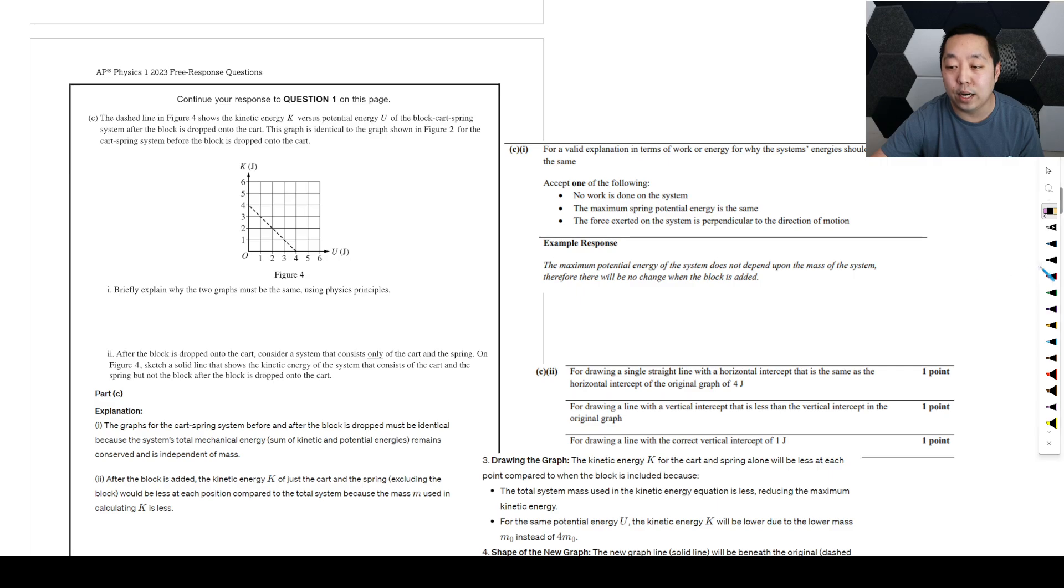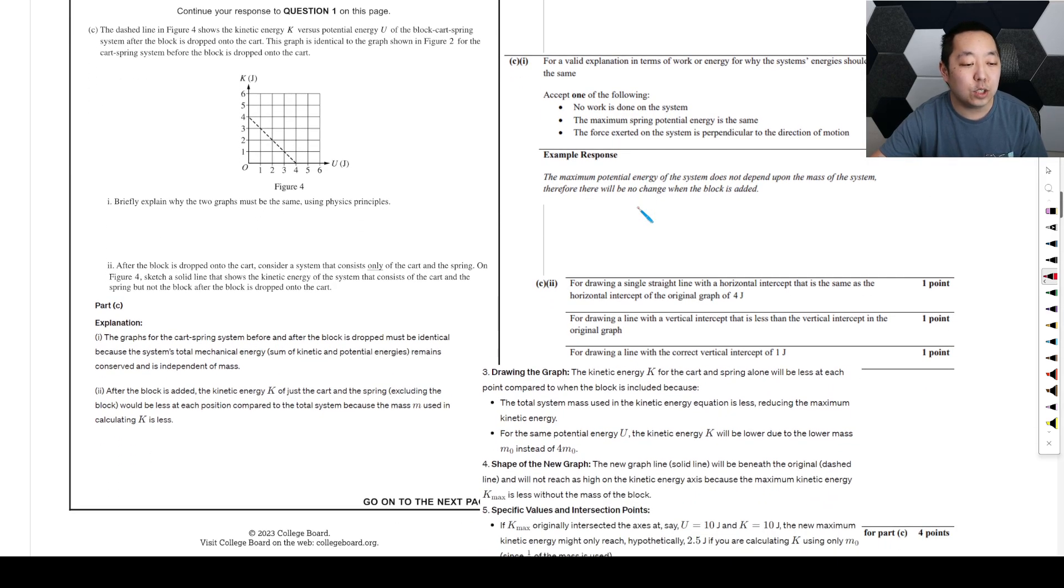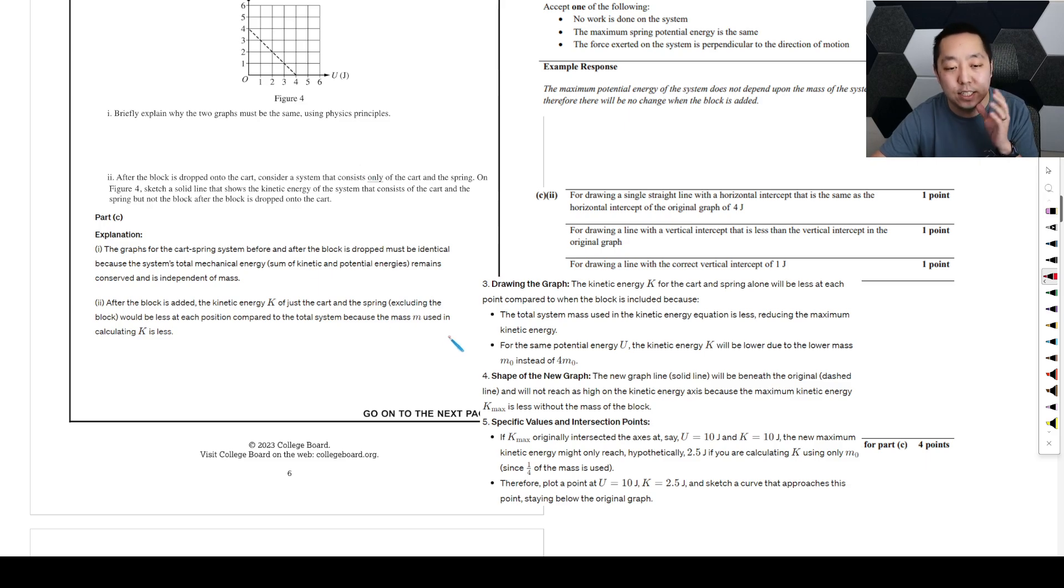Let's take a look at this one. This one was a little tricky because you're supposed to explain why the graphs are the same. Because the total kinetic energy remains independent of mass. This is the example. The maximum potential energy system does not depend on the mass of the system, therefore will be no change when the block is added. So that is correct. I think that's a good explanation. Here's where when you ask it to sketch a graph, it didn't give me an answer the first time. Here's where I had to specify a little bit more about what to do. So I wanted it to tell me exactly how to draw it because I was like, well, you can't draw it. But at least tell me if I were a student, what I should draw on there.